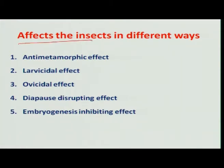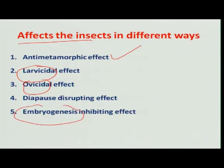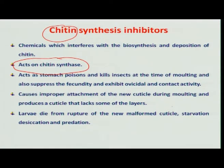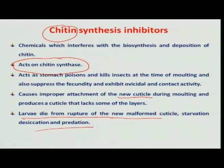These insect growth regulators affect in different ways. They act as antimorphic chemicals and mainly act on larvae; they even act on eggs, and ultimately they inhibit embryogenesis and egg hatching. The insect growth regulators also inhibit the synthesis of chitin. Chitin is one of the important constituents of insects which gives protection in many ways. They act on the chitin synthase enzyme, and most insect growth regulators act on the cuticle — especially the chitin layer — thereby rupturing the insect and producing a malformation effect, causing the insect to die because it cannot reach the further developmental stage.